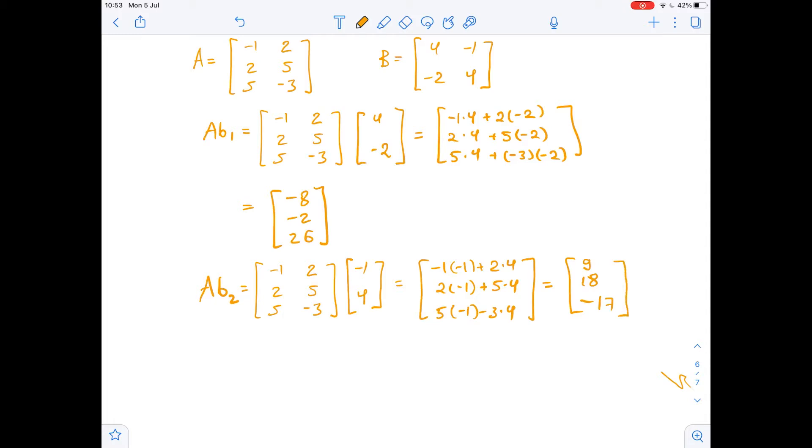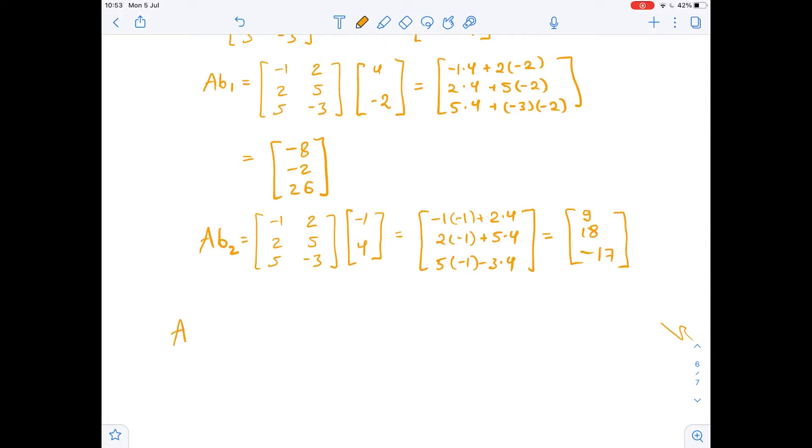So now we can find AB. To find AB, we'll just compute AB1 and AB2, so we will get negative 8, negative 2, 26, 9, 18, negative 17.